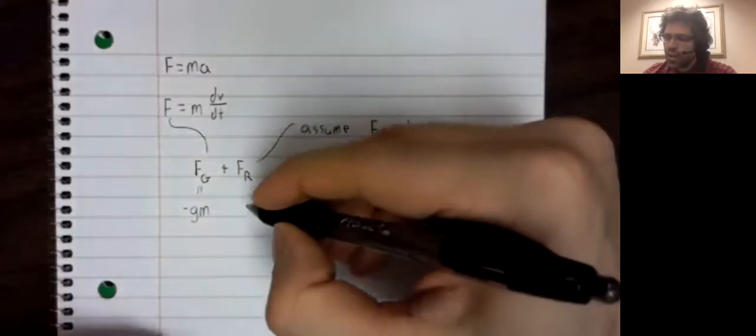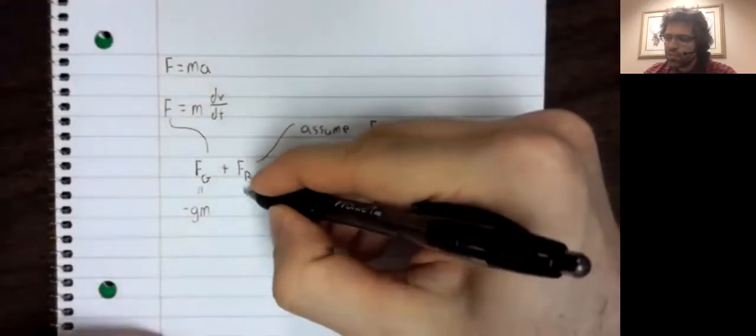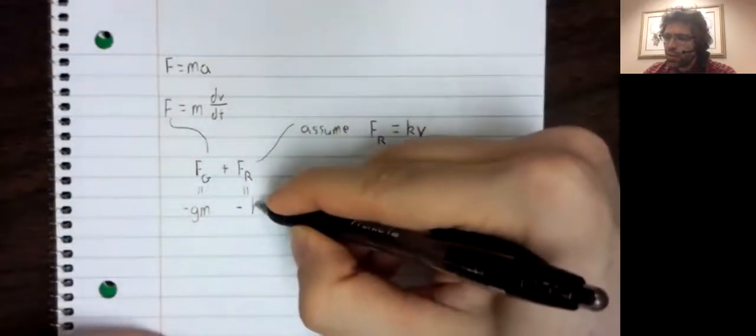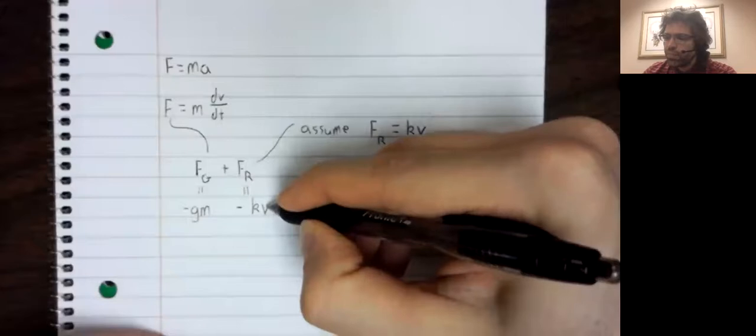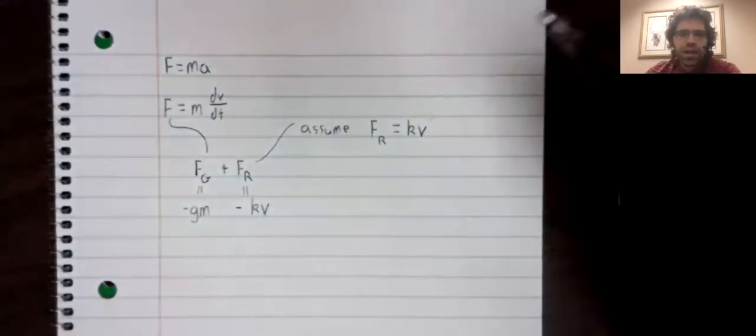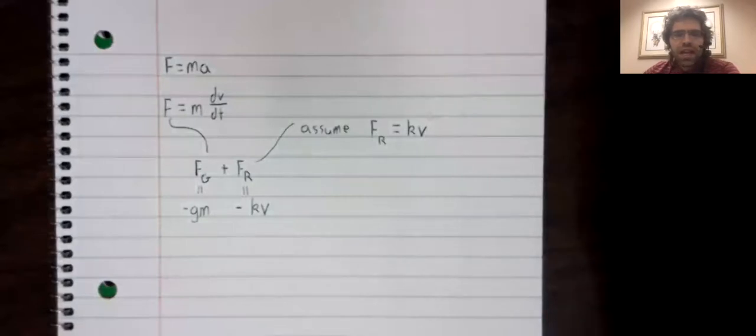Except when we write it down, we're going to include a negative sign. And why is that?